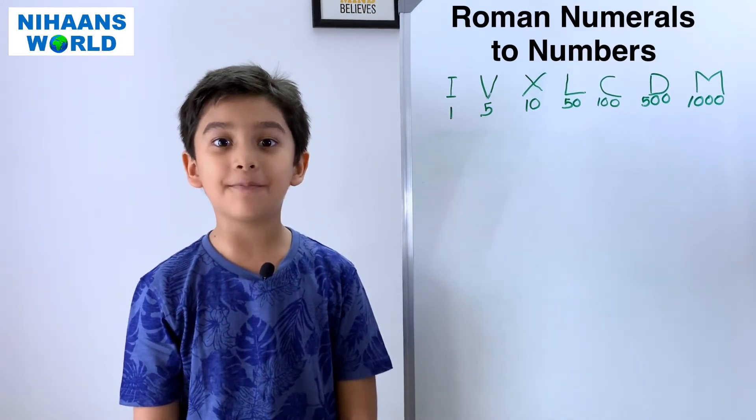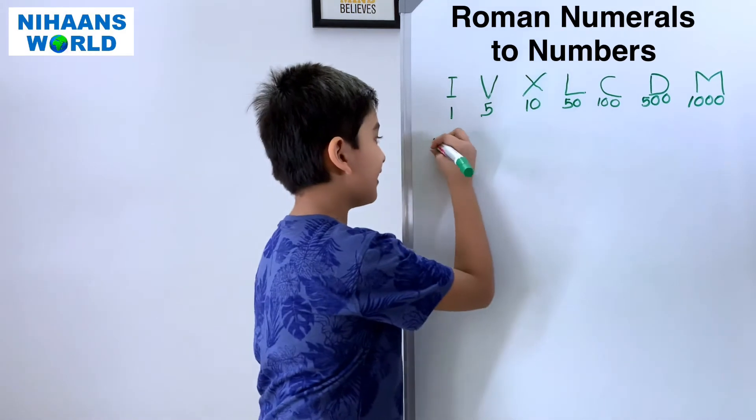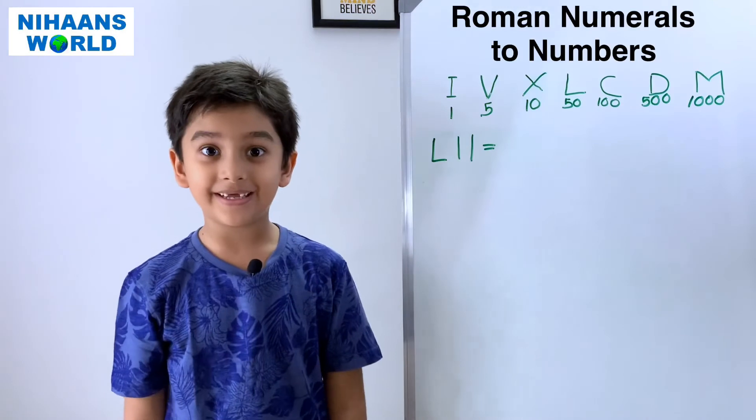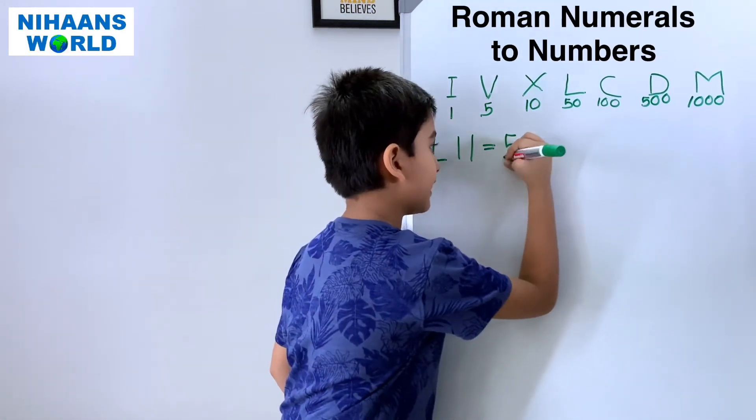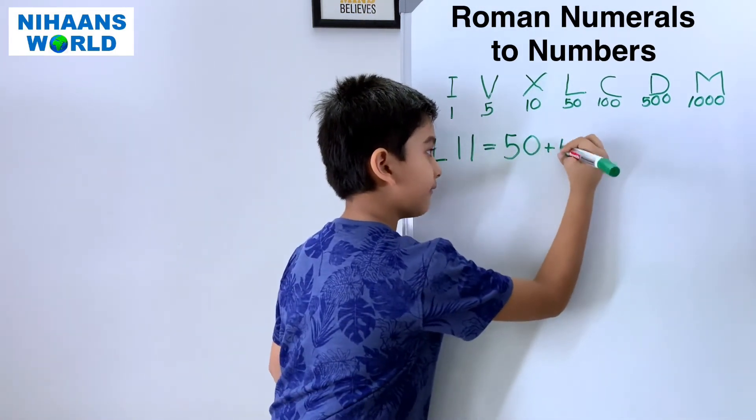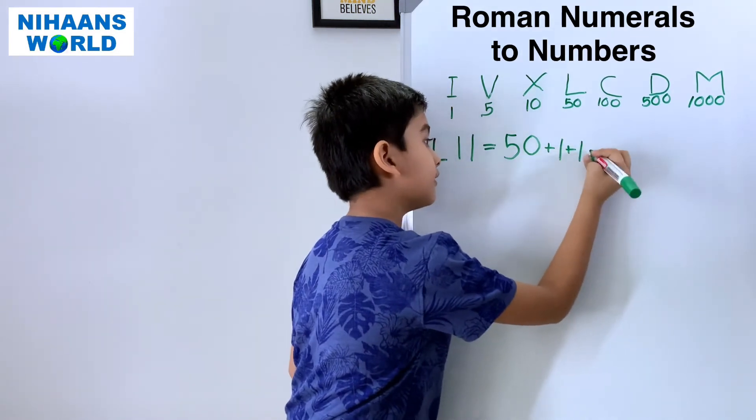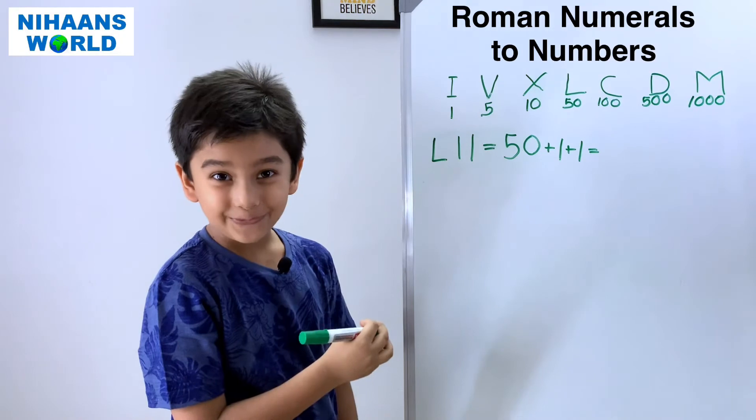Let's write the Roman numerals into numbers. L I I. So, what do we write it in expanded form? L is equal to fifty. I is equal to one. And I is equal to one. So, fifty plus one plus one is equal to fifty-two.